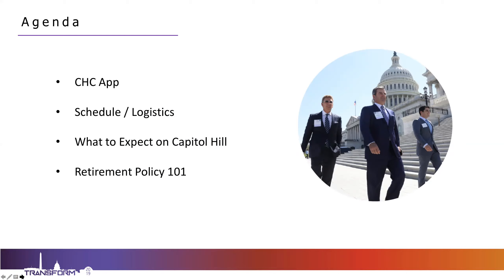We'll also walk you through a little bit of the schedule and logistics for Capitol Hill Club, making sure you guys have a really good sense of where you need to be, what times, and kind of how to go about that day. We'll also talk to you about what your meetings will be like. Every meeting is different, but they'll generally have a standard sort of structure. We've also got Armstrong Robinson with us today, and he'll walk us through a little bit of Retirement Policy 101—what we'll be talking to legislative offices about on the Hill.